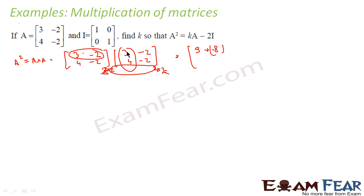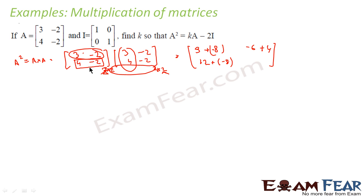The second element (1st row, 2nd column) is 3×(-2) = -6 plus (-2)×(-2) = +4, giving -2. The third element (2nd row, 1st column) is 4×3 = 12 plus (-2)×4 = -8, giving 4. The fourth element (2nd row, 2nd column) gives -4. So A² = [[1, -2],[4, -4]].